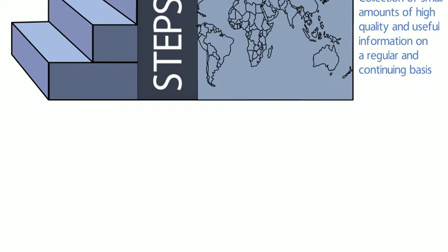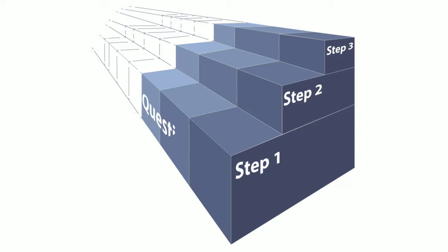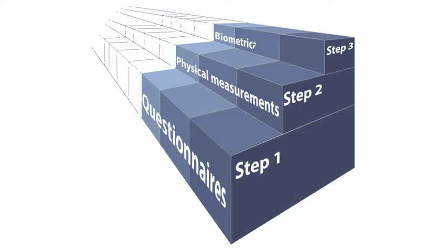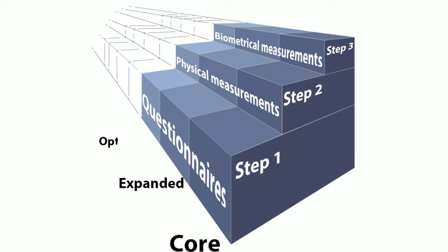STEPS is considered to be staged in that it starts with relatively simple to implement surveillance methods that most countries, even those with very limited capacity, should be able to implement, and then provides options to add more complex collection methods, such as the collection of body measurement data or the collection of blood samples for biochemical analysis, if resources are available and there is a need.